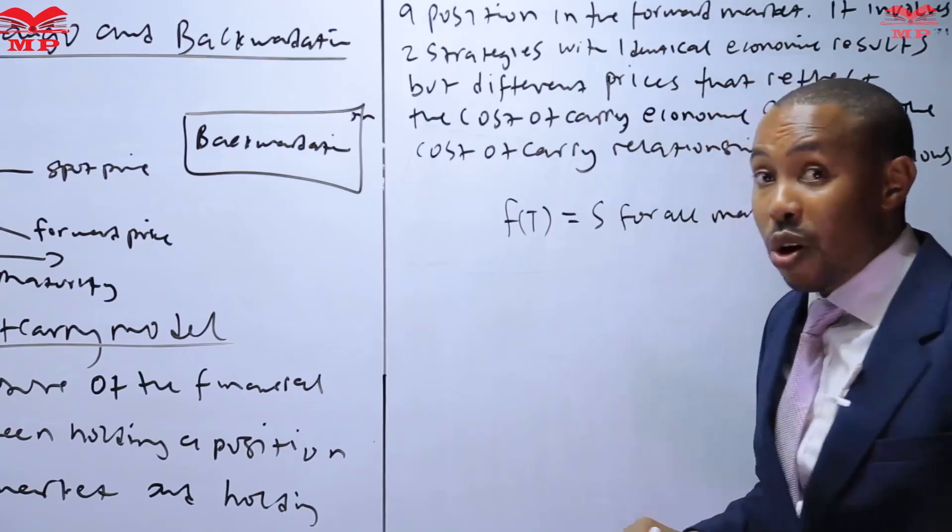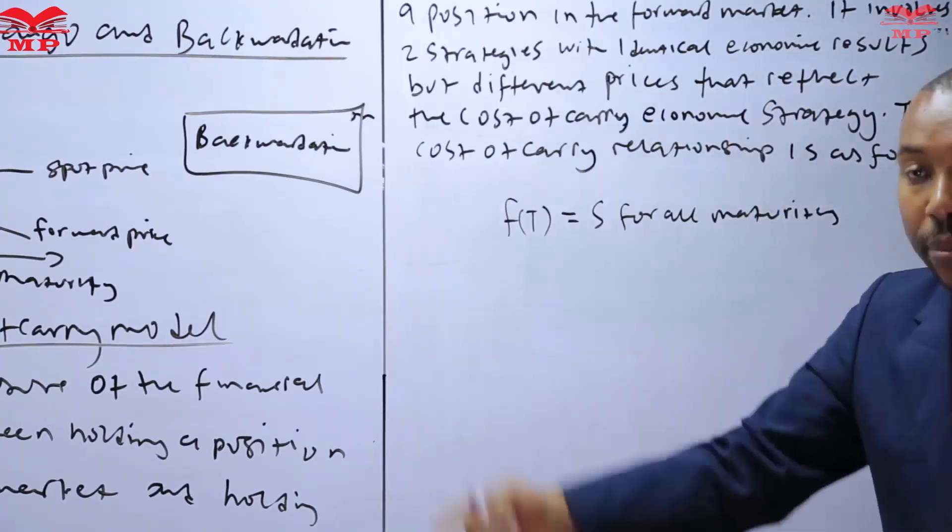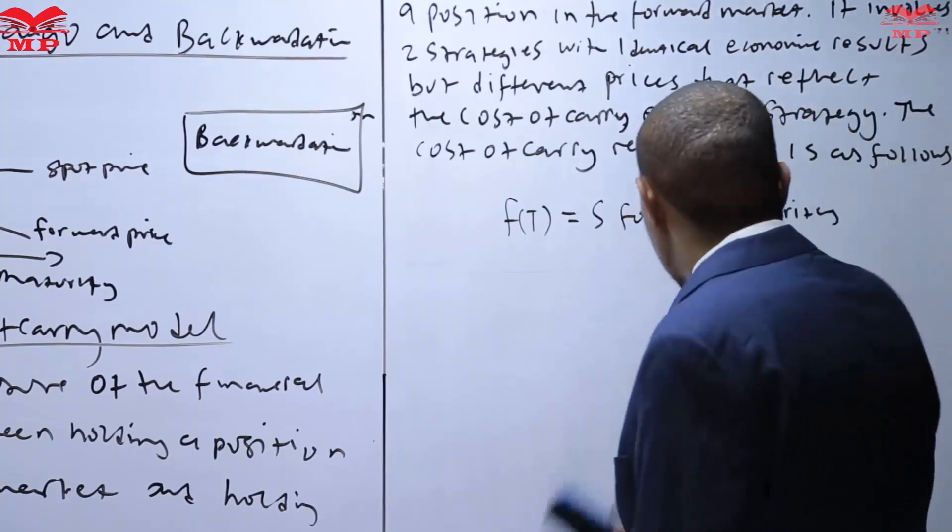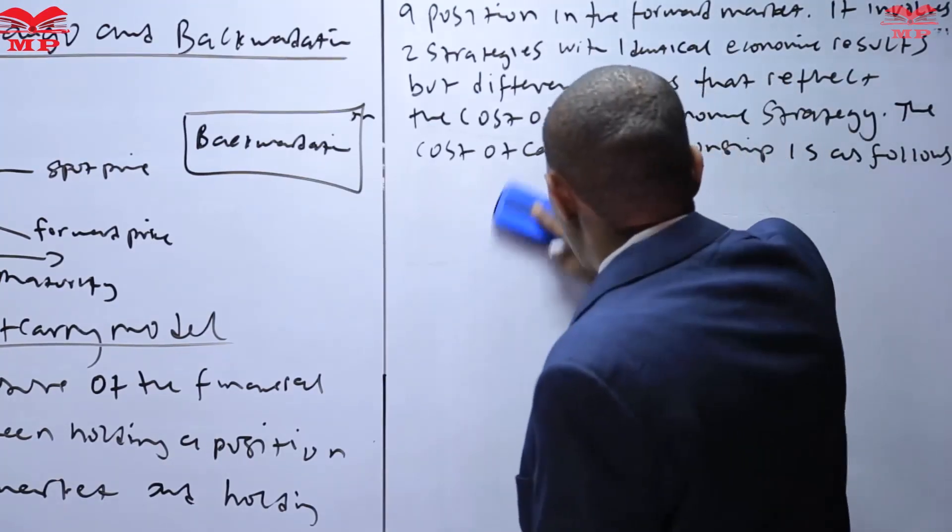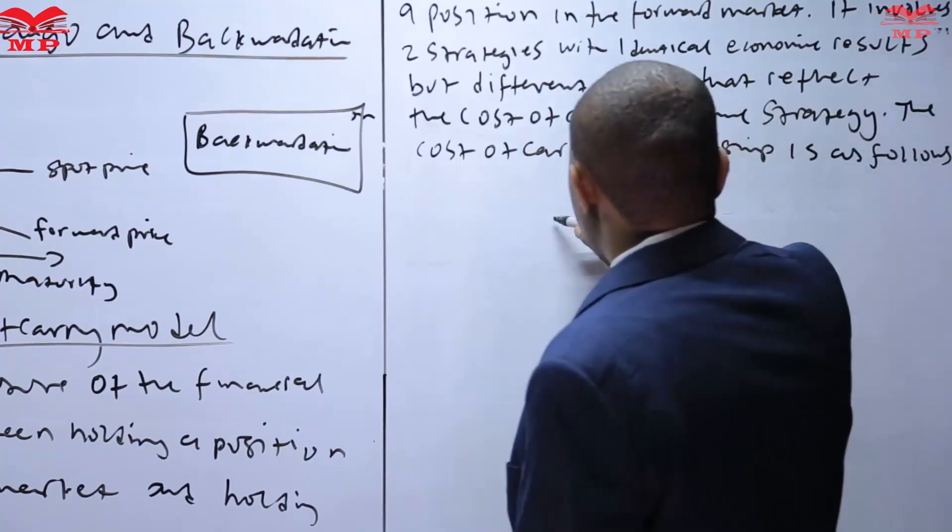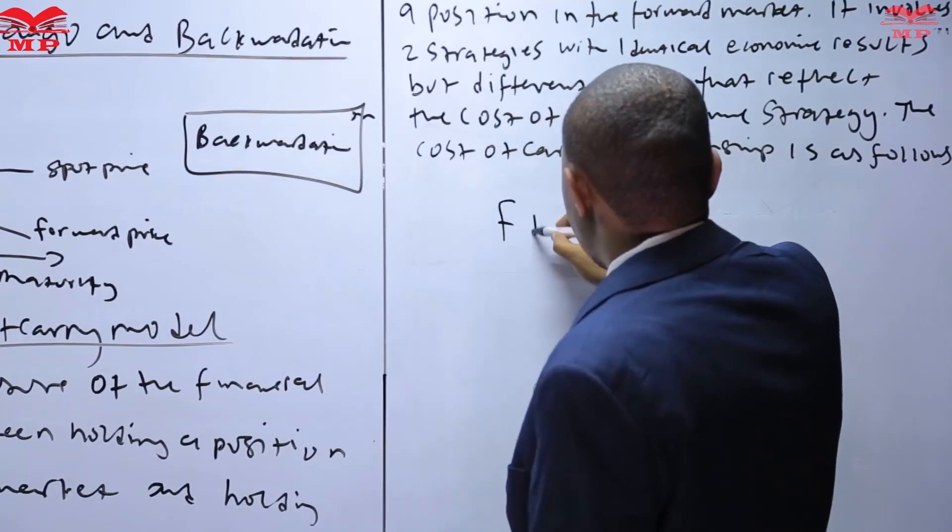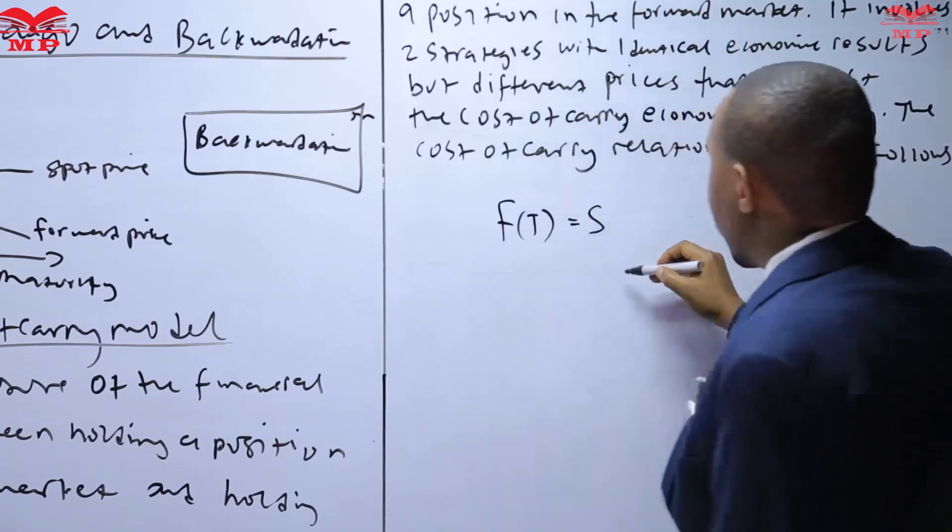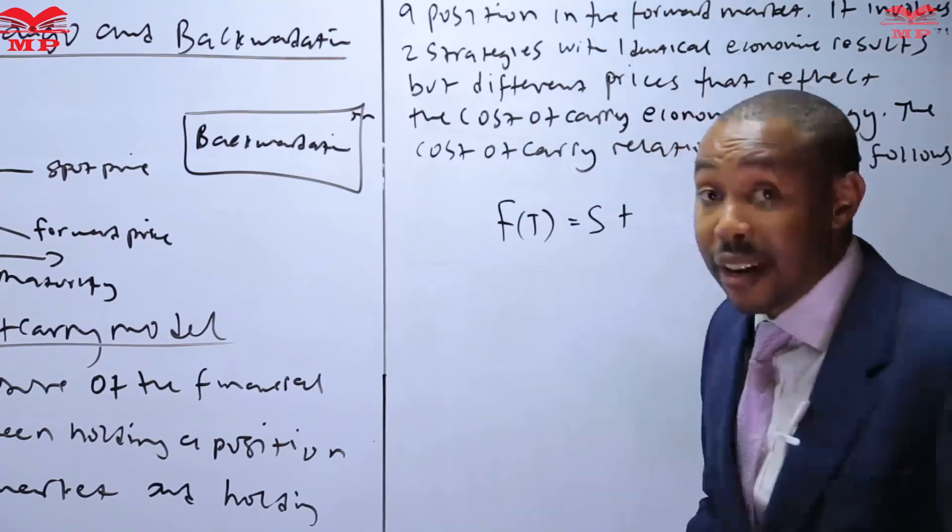That is when we are looking at the term structure of forward prices. Now we are building on this from our previous lesson by looking at a different model, which is of the form FT given as the stock price plus the carrying costs.